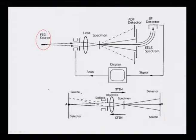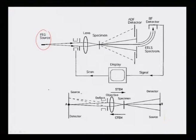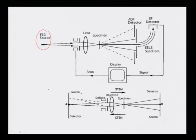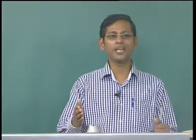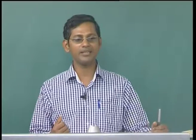As the convergent beam falls on the specimen, some part will be diffracted and some part transmitted. If one collects the diffracted beam intensity using a detector, one can form dark-field images. As the beam scans over the sample, the diffracted or transmitted beam is collected by the detector and plotted on the computer to obtain an image — just like in a scanning electron microscope.